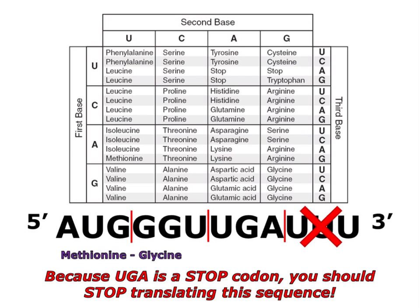Some people like to write 'stop' in their answer so that they remember that this was a stop codon. But remember, stop is not an amino acid. So if the question asks what the amino acid sequence is, the answer is just methionine, glycine, and glycine.